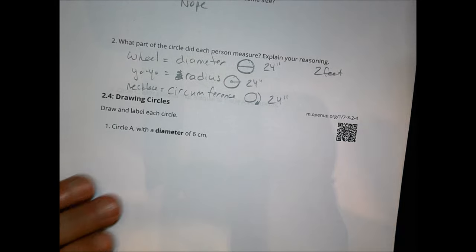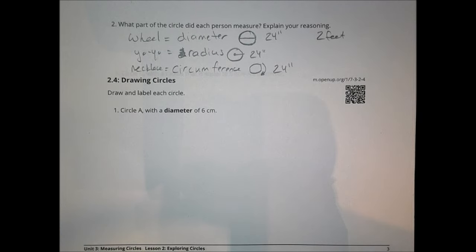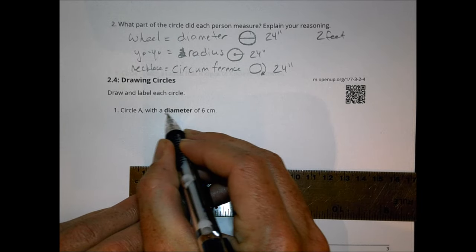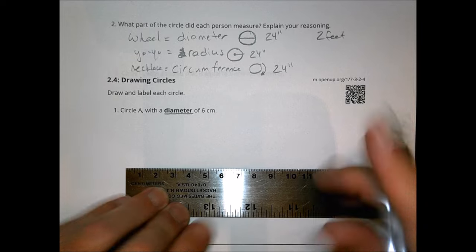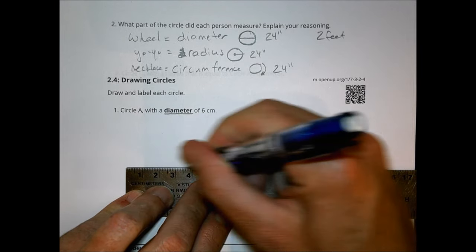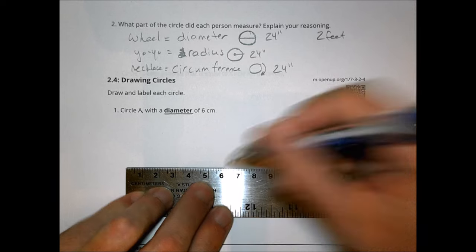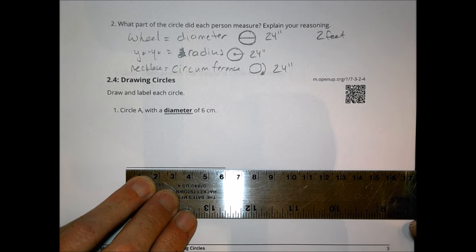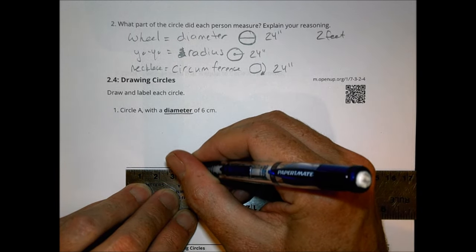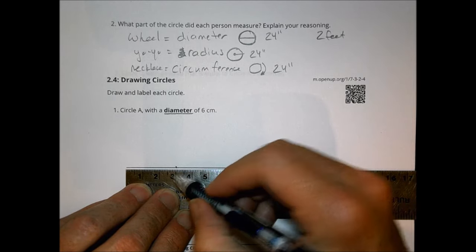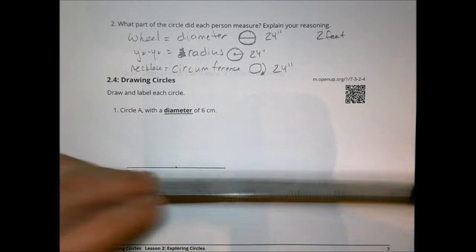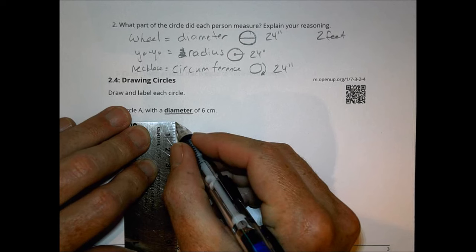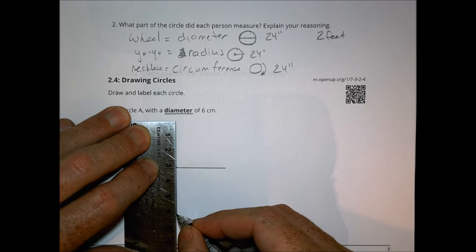The next activity had you taking a ruler to make circles. For circle A with a diameter of six centimeters — diameter is the distance across the circle — I go from zero out to six. If you had a compass it would be easier. I put a point at the midpoint, which is three, then use my ruler turned sideways to make a 90-degree angle and draw another line.